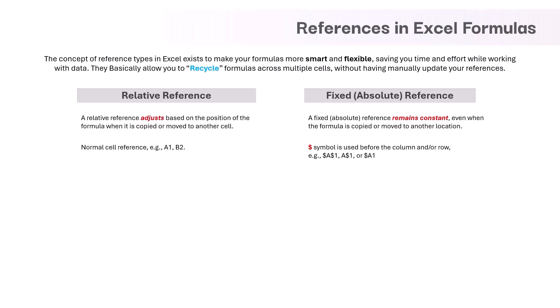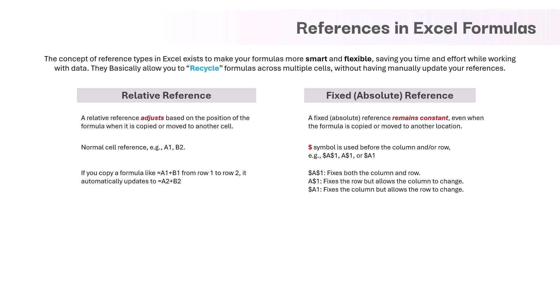In relative reference, if you copy a formula like A1 plus B1 from row 1 to row 2, it will automatically update to A2 plus B2. But in absolute reference, the behavior of the cell reference changes based upon the position of the dollar symbol. If we have a dollar symbol in front of both column and row, it fixes both and neither will change. If the dollar symbol is in front of the row but not the column, it fixes the row but allows the column to change. If the dollar symbol is in front of the column but not the row, it fixes the column but allows the row to change.